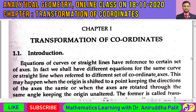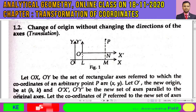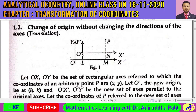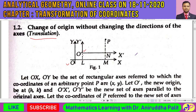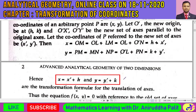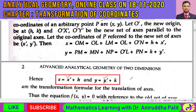Let's start the first chapter: transformation of coordinates. We actually studied this kind of transformation in our class 11 and 12 school-level geometry. This kind of transformation is called the translation process. Translation means without changing the direction of the coordinate axes — that is, x-axis and y-axis — we shift the origin from the old position to the new position. The transformation formulas are: x = x' + h (or x' = x - h) and y = y' + k (or y' = y - k). These are the translation formulas you already know from class 11 or 12.